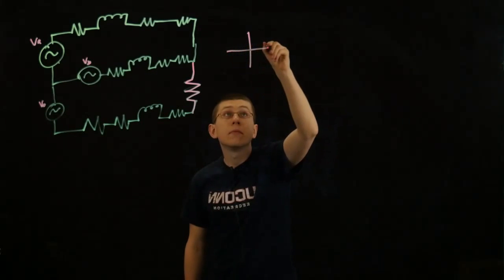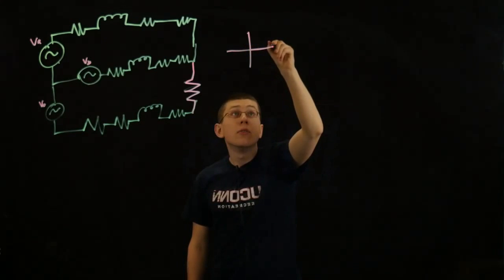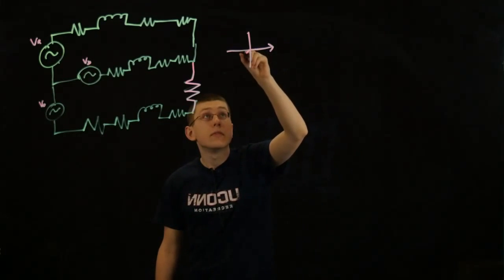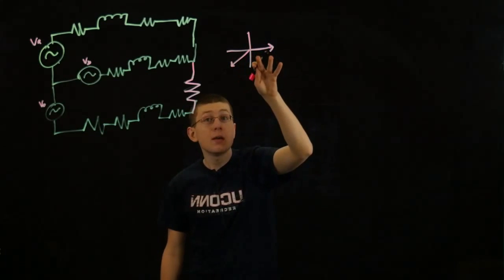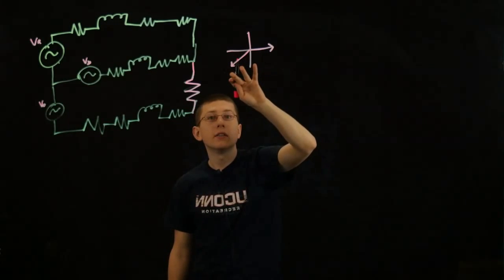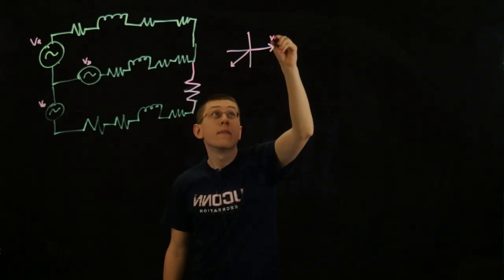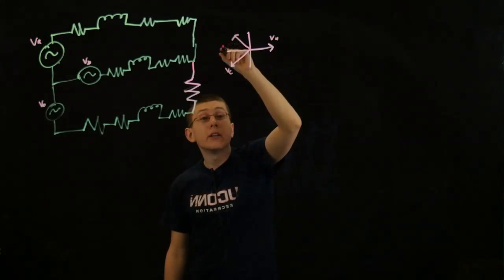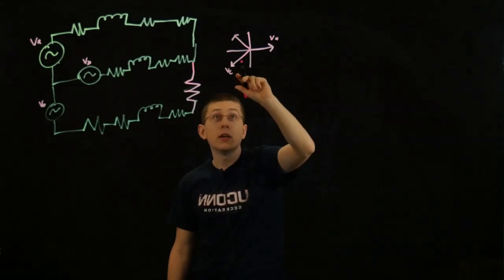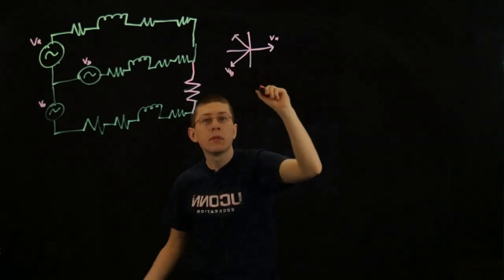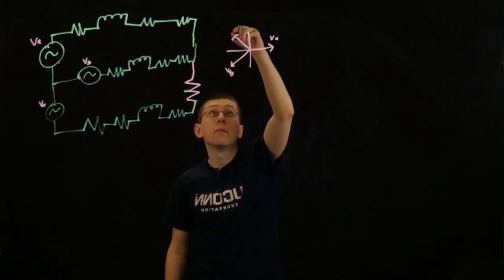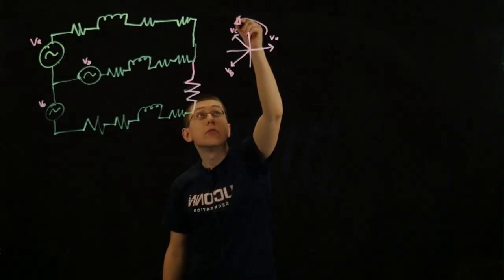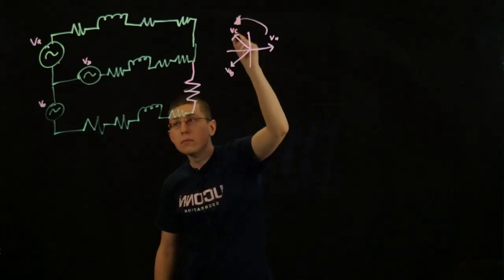And drawing this as a phasor diagram, we consider VA to be zero phase. This is our reference. This is our VB. Same magnitude, but the phase is minus 120 degrees. And VC is minus 120 degrees of VB. So it's the same thing as plus 120. So here's VC. And these phasors will rotate in this direction.